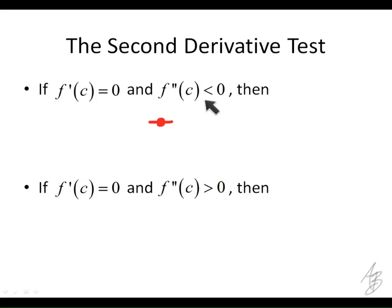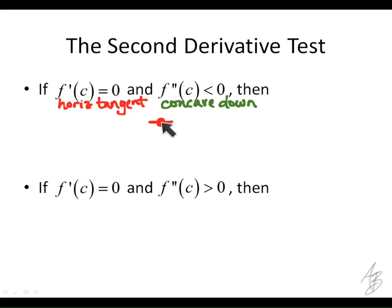The second thing we know is that the second derivative is less than zero. If the second derivative is less than zero, what does that mean? We have a horizontal tangent, and the second derivative less than zero means it's concave down. So what's this going to look like at this point? It can't be concave up to the right — it has to be concave down. So if it has a horizontal tangent and it's concave down, that means it's a maximum.